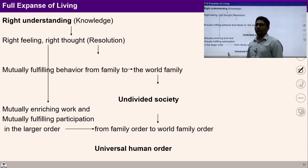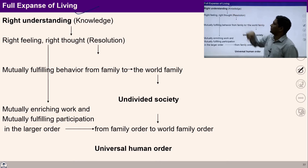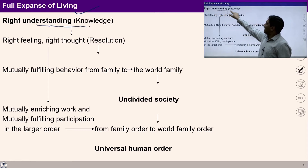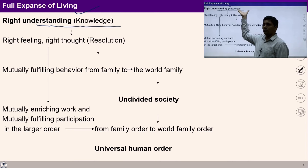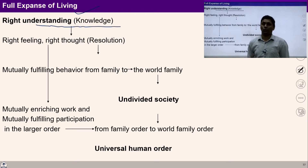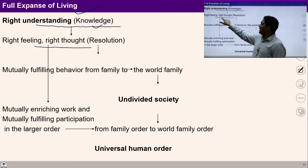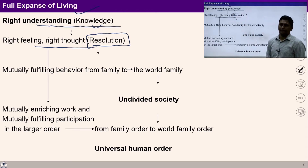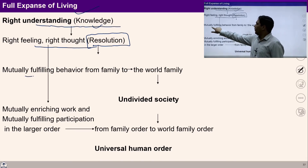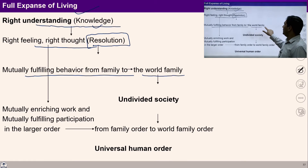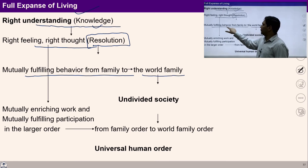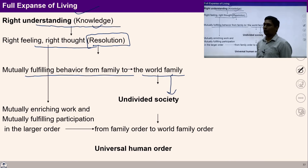Let us see our full expansion of living. Right understanding — knowledge — means to know the reality as it is and to know the relationship with every unit. With this knowledge I can ensure right feeling and right thought in myself, which is termed as resolution. With this resolution I am able to ensure mutually fulfilling behavior from family to world family order, which will lead to undivided society.